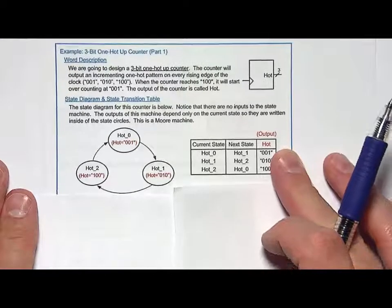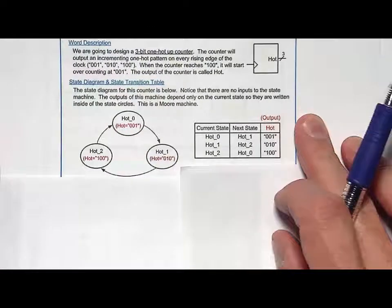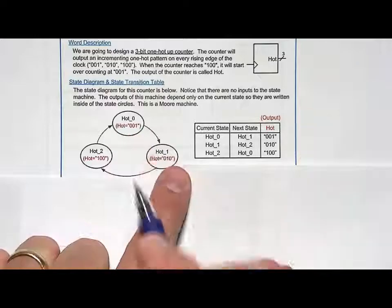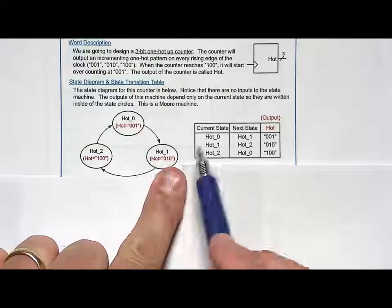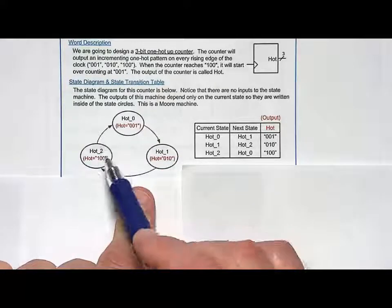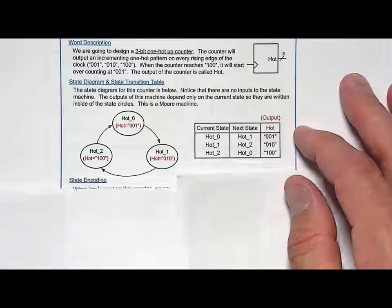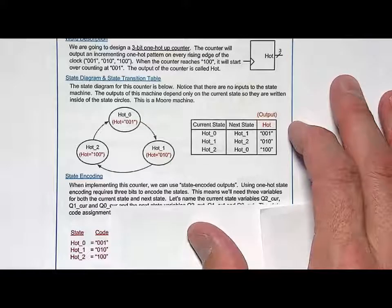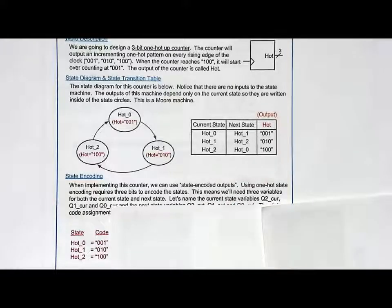Now we go to the synthesis, and we want to take advantage of the counter behavior by assigning the state codes to match the outputs. So we assign hot0 the code 001, hot1 the state code 010, and hot2 the state code 100. That will allow us to do what we call state-encoded outputs. We're going to use three D flip-flops because we need one for every bit within the state code. It looks like a larger circuit, but the next state logic turns out to be quite simple.